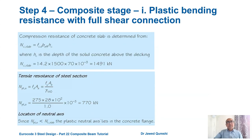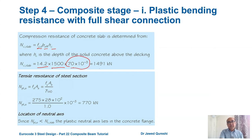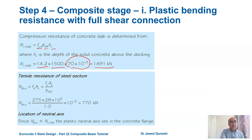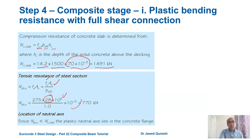fcd = 0.85 × fck / γc = 0.85 × 25 / 1.5 = 14.2 N/mm². Compression resistance of the concrete slab: Ncf = fcd × beff × hc = 14.2 × 1500 × 70 × 10⁻³ = 1491 kN. Tensile resistance of the steel section: Npla = fy × A / γM0 = 275 × 2810 × 10⁻³ = 770 kN. Since Ncf (1491 kN) > Npla (770 kN), the PNA lies within the concrete flange.